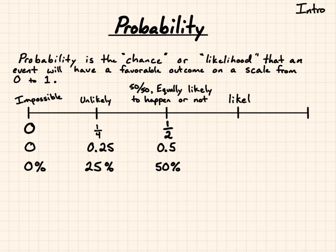Likely to happen is getting to be 3 quarters, and that's 0.75 as a decimal and 75% as a percentage. Then, furthest to the right here, we have certain. You know it's going to happen. There's no doubt to it. That would be a 1. And that's 1.0 as a decimal and 100% as a percentage. And for probability, we're going between 0 and 1.